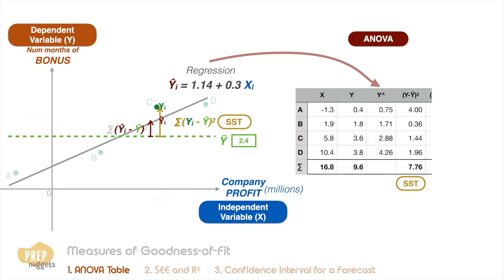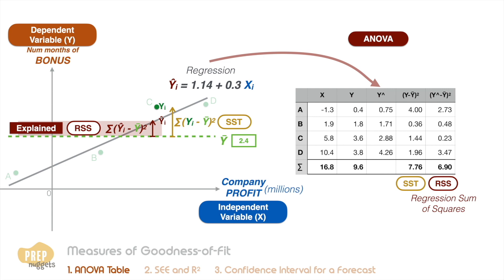If we sum up the squared distances between the values from the model and the mean, we get the regression sum of squares, or RSS in short. The portion of the total variation that's explained by the regression model is the RSS.